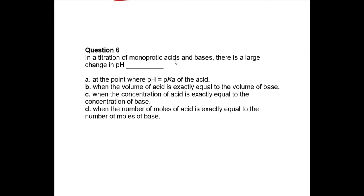Question six: in a titration of monoprotic acids and bases, there is a large change in pH at the equivalence point — that is where there's a sudden jump in pH. At the point where pH equals pKa, the pH is going up steadily, not a large change. Equal volumes of acid and base also isn't necessarily the equivalence point because concentrations and proticity must be considered.